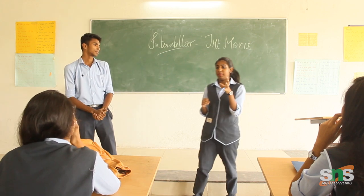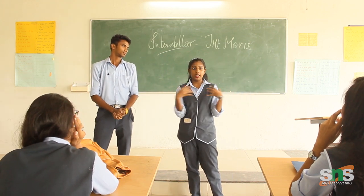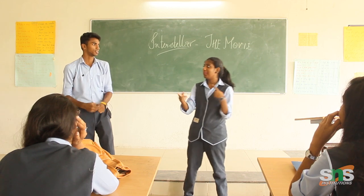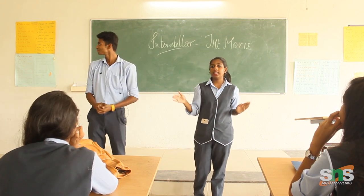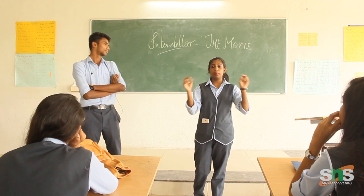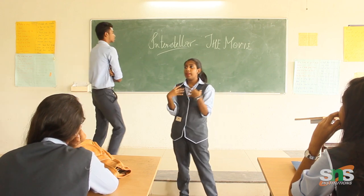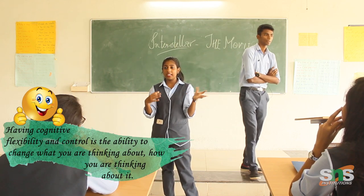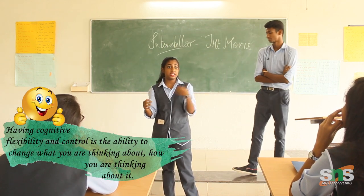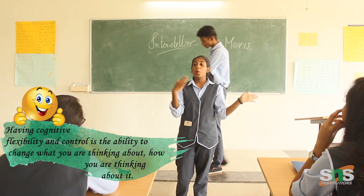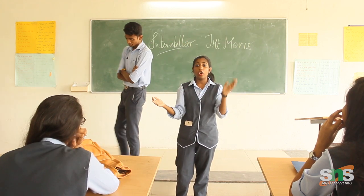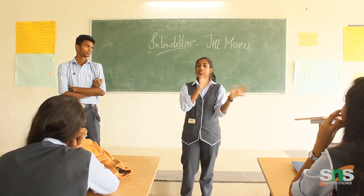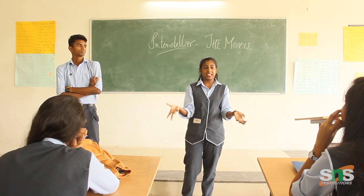Now, time dilation. According to the theory of relativity, time dilation is the difference of elapsed time seen by two different observers when they change in velocity or when they are situated in different gravitational fields. To make this easier, I am going to give an example.